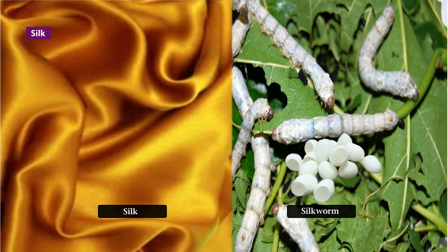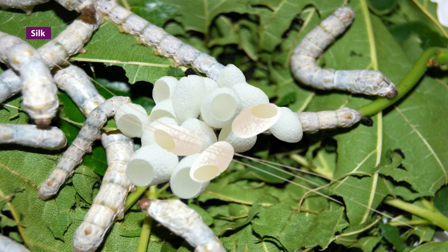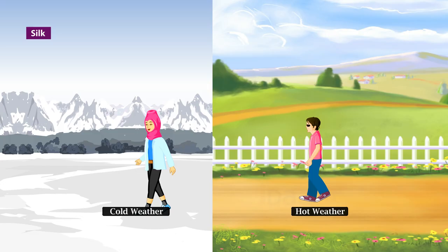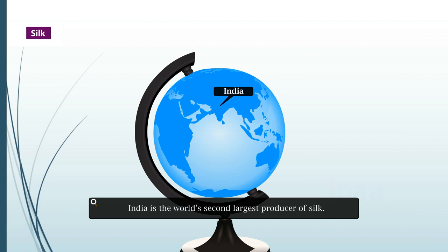Silk is an insect fiber. It comes from the silkworm cocoon that the silkworm spins around itself. A single filament from a cocoon can be as long as 1600 meters. It is considered an animal fiber because it has a protein structure. Silk acts as an excellent insulator to keep our bodies warm in cold weather and cool in hot weather. China is the leading silk producer of the world, and India is the world's second largest producer of silk.